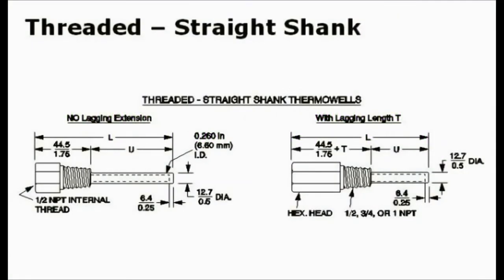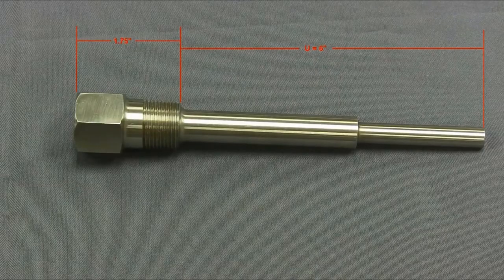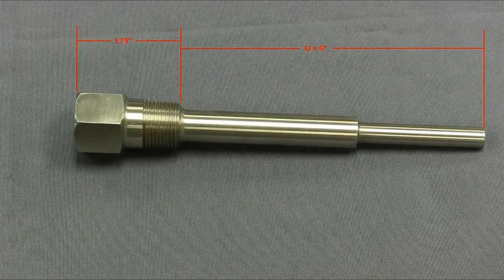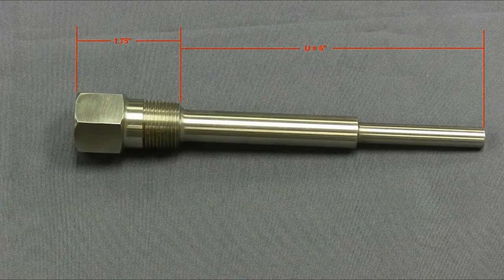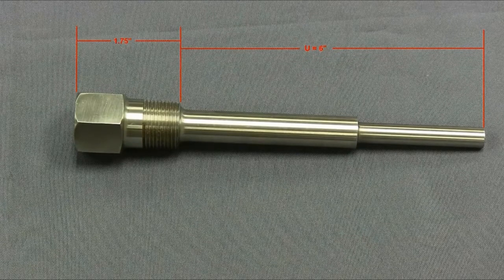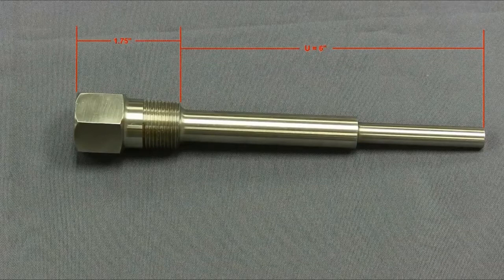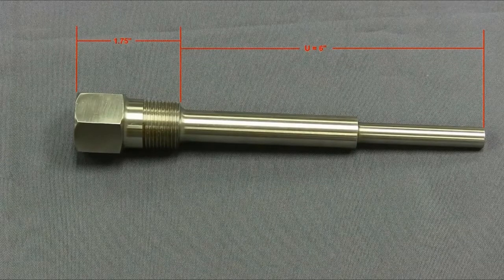Let's begin by reviewing exactly where the thermowell U insertion length and the T lagging length are located and measured on the thermowell. The U insertion length is measured from the tip of the thermowell to where the threads start. This measurement shows the well has a U dimension of 6 inches.